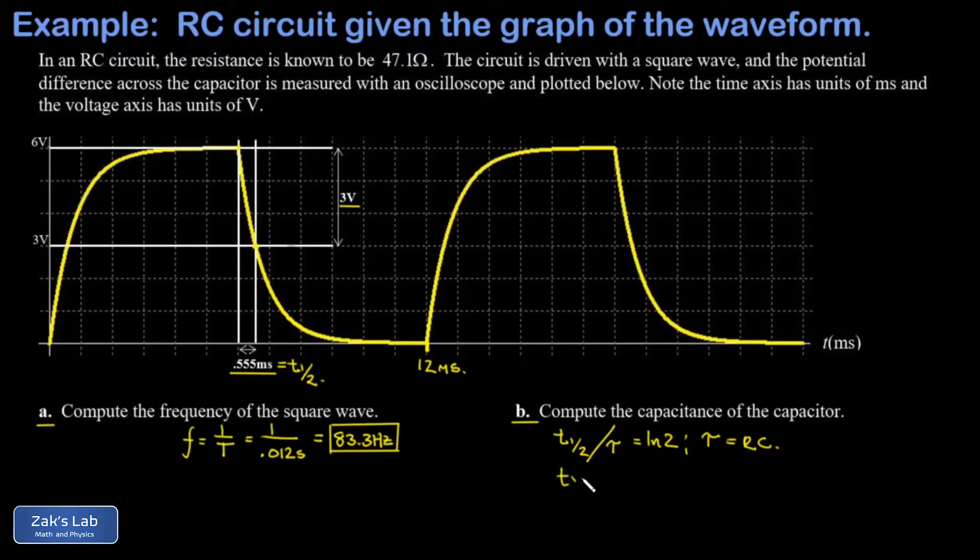So I have half-life over RC equals natural log 2. We solve for C, I'm going to multiply both sides by C and then divide by natural log 2 and I get that C is equal to my half-life divided by R natural log 2.